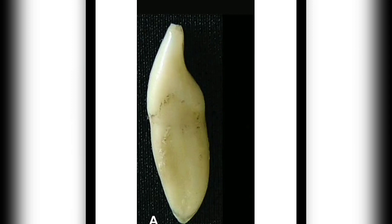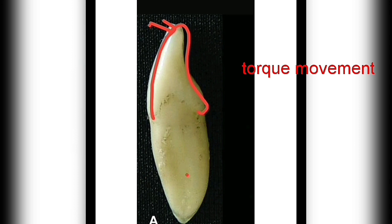This is called torque movement, also known as reverse tipping movement or reverse lingual movement. In this, the root is moved lingually only when force is applied at the tip point of the crown.